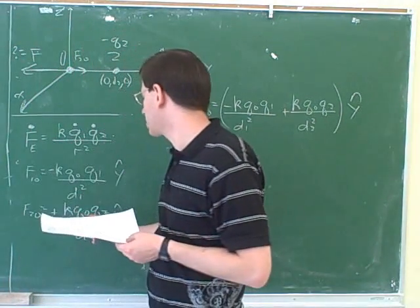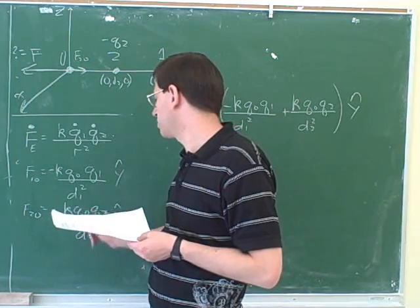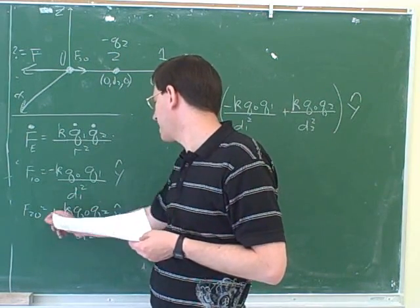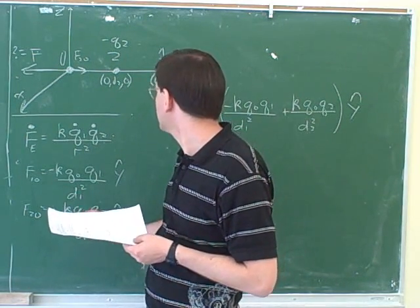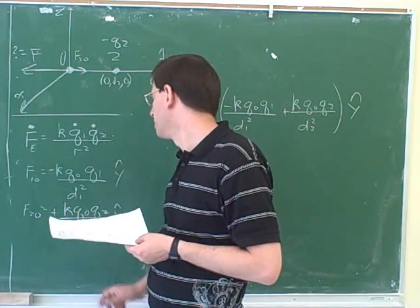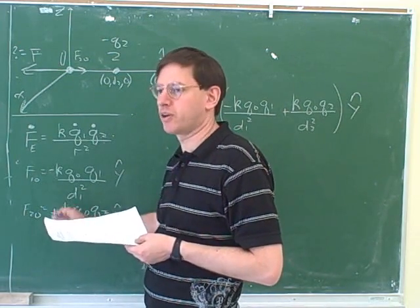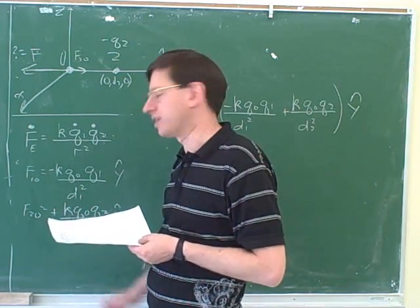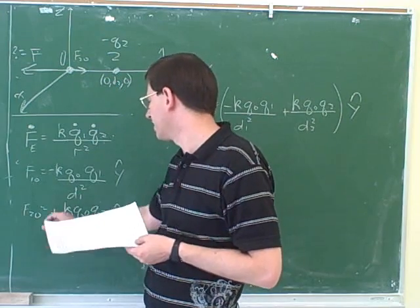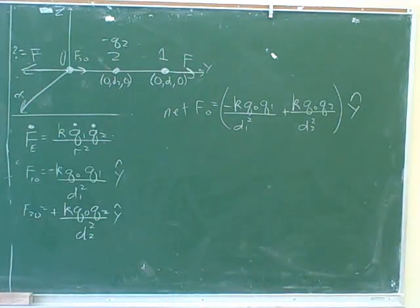Notice that the signs on the charges don't tell you the signs in this formula. If you're just putting in the signs on the charges, you might think this was negative because q2 is negative. But we're really just putting in magnitudes here and figuring out the sign separately — just the magnitudes of the charge, and then we figure out the signs.